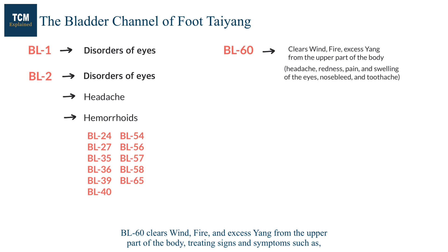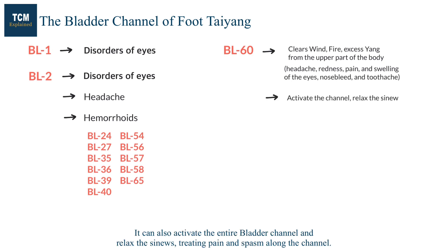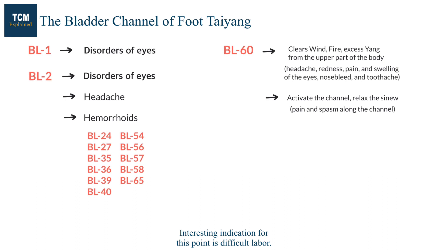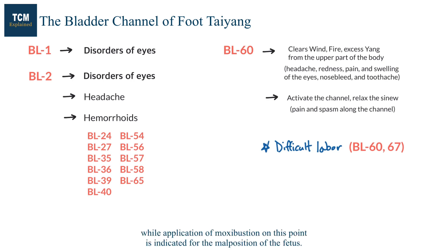Bladder 60 treats signs and symptoms such as headache, redness, pain and swelling of the eyes, nosebleed, and toothache. It can also activate the entire bladder channel and relax the sinews, treating pain and spasm along the channel. An interesting indication for this point is difficult labor. Another point on this channel, bladder 67, also has the action of facilitating labor, while application of moxibustion on this point is indicated for malposition of the fetus.